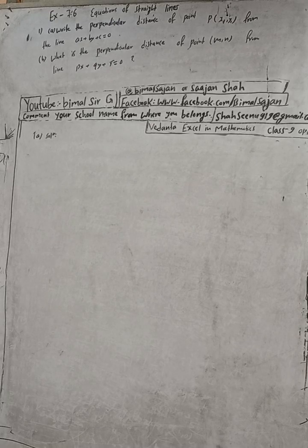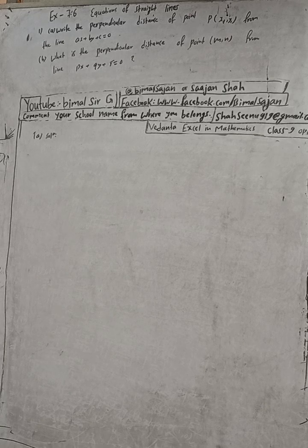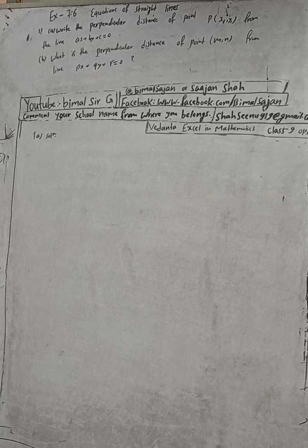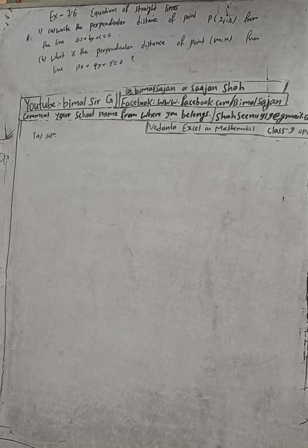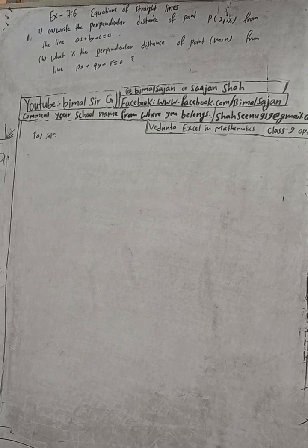Hi class 9 and 10 students, welcome back to Vimal Sergi YouTube channel. This is question number one, exercise 7.6, equations of straight lines, class 9 optional mathematics, Vedant publication. Don't forget to check the playlist — all solutions of 7.6 are uploaded, and also 7.7, all from short to long, is uploaded. Check the playlist.